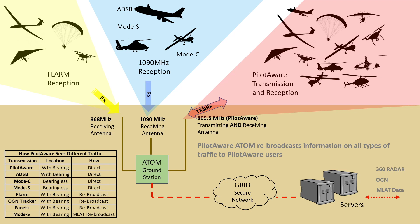Those aircraft picked up directly and those relayed from the ATOM grid network are both visible. The ATOM station is also fed with MLAT data, which is used to provide positional information to in-flight PilotAware units for Mode S transmissions that do not provide GPS coordinates. So the ATOM grid network is very good at providing a level of interoperability between the legacy systems that have been voluntarily installed by pilots throughout Europe.